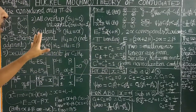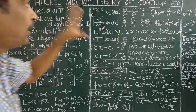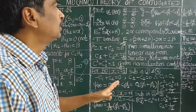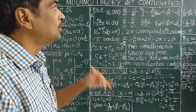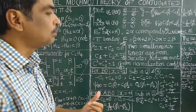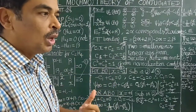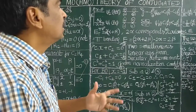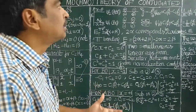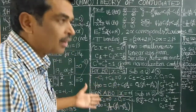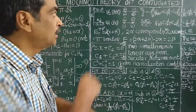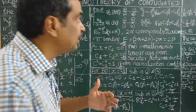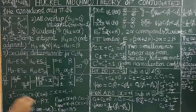HMO theory is applicable for the conjugated system. A conjugated system consists of alternating single bonds and double bonds. The conjugated system may be linear or cyclic, such as benzene, naphthalene, and other aromatic compounds.